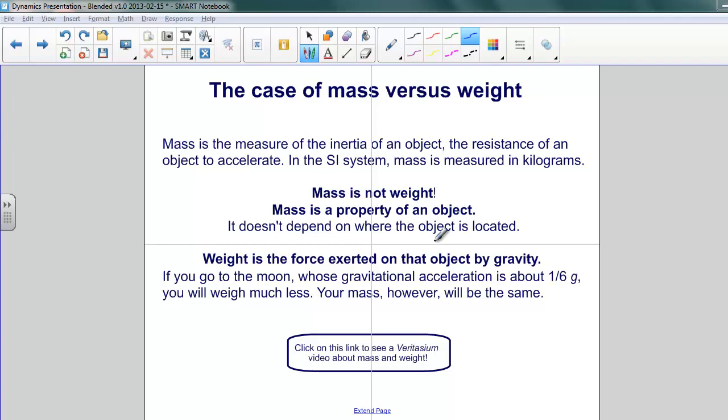Mass is the measure of the inertia of an object, the resistance to being accelerated. In the SI system, mass is measured in kilograms. Mass is not the weight. Remember that. Mass is a property of an object. It's really a measure of the amount of stuff or matter in the object. It doesn't matter where that object is located.